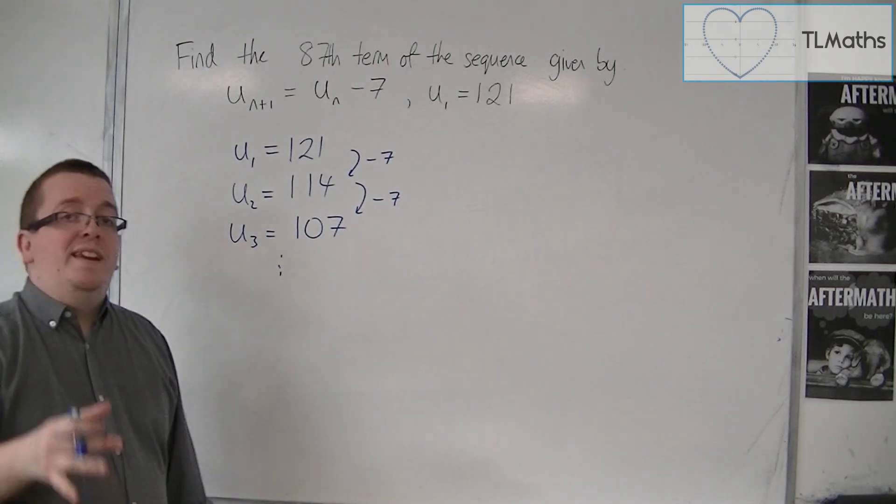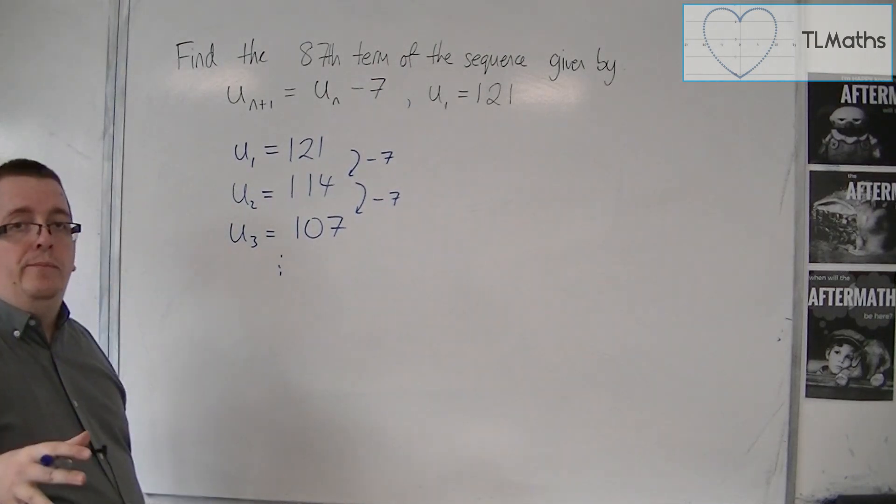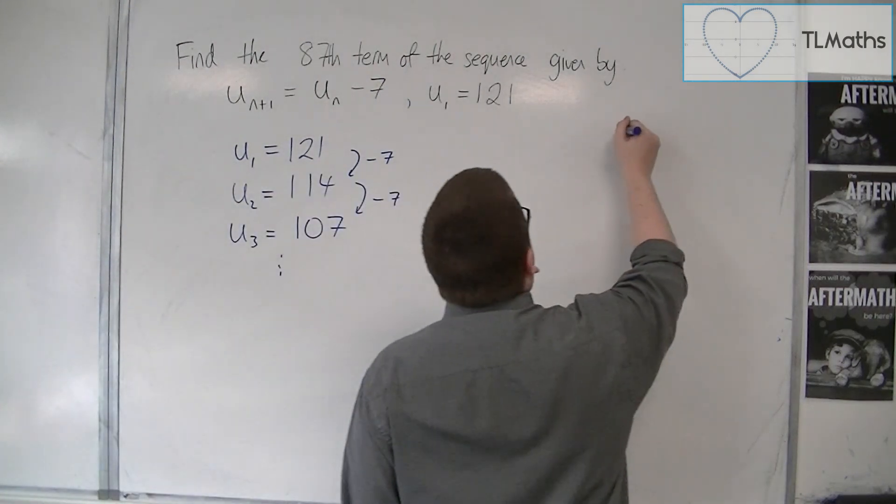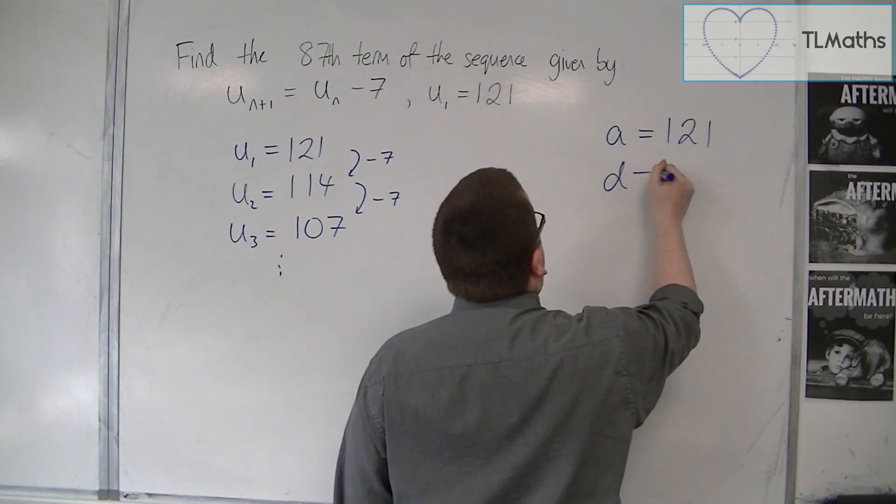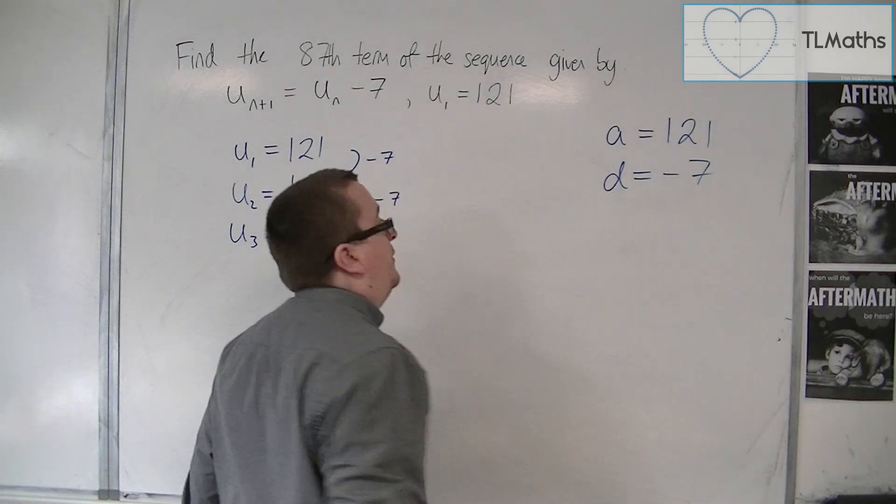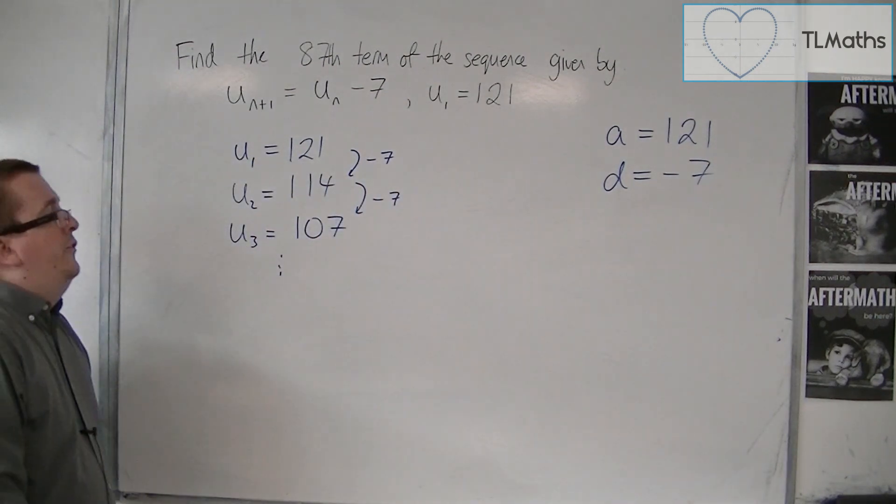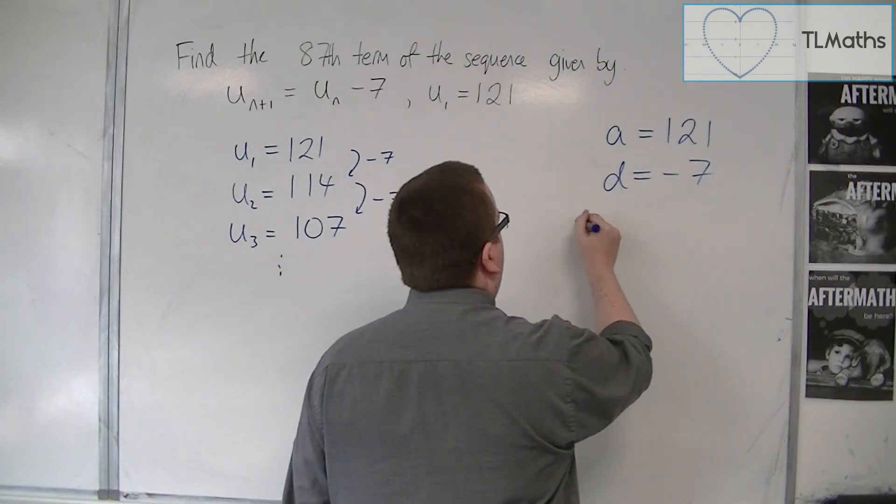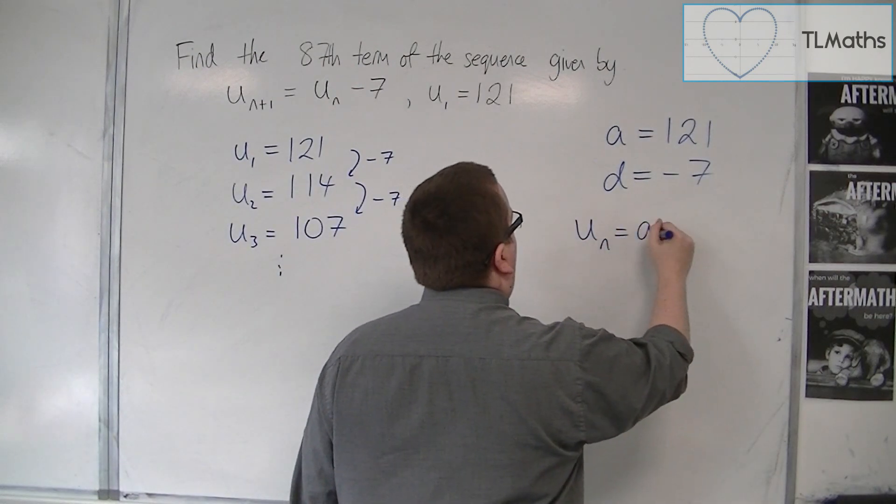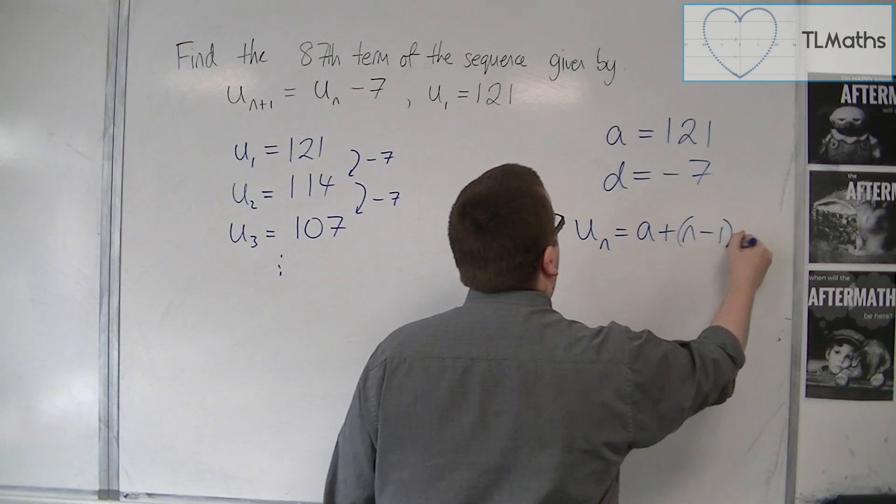So this is actually an arithmetic sequence. I'm able to identify that the first term is 121 and there is a common difference of minus 7. So I can write down from the formula booklet the nth term, which is a + (n-1)d.